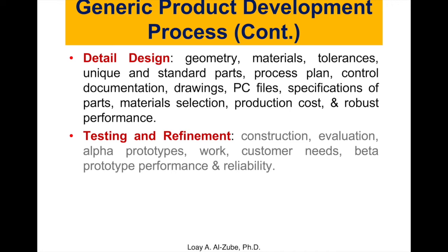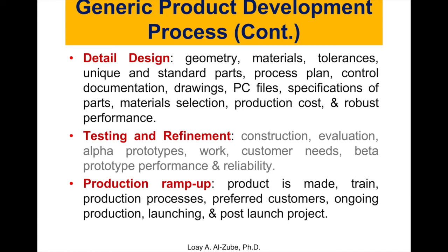A beta prototype is a prototype that is ready to be used by customers. We are going to focus more on the design and having something functional, but not ready for end-user experiences. The last stage is production ramp-up — the product is made now and we're going to train people how to use it. One team member should be knowledgeable in manufacturing in order to look at production processes and what we need. We will identify our preferred customers, and look at ongoing production, launching, and post-launch. In our class, we will focus on creating an alpha prototype, but it will be helpful to have documentation about the production ramp-up phase.